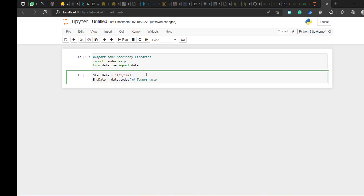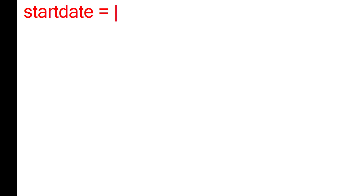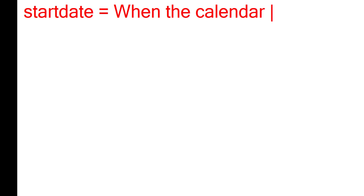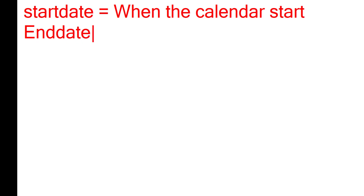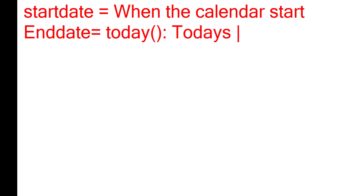If you're used to programming, a start date means when you actually started. The end date is when the calendar ends. Since in an organization the date keeps increasing day by day, most times we use something called today, which basically gives you today's date.